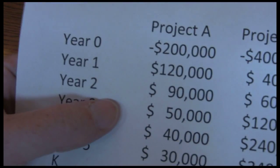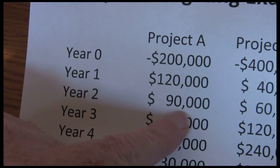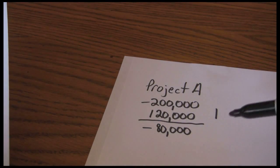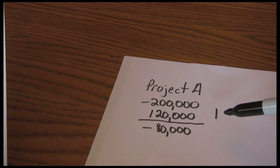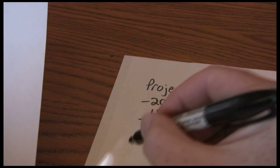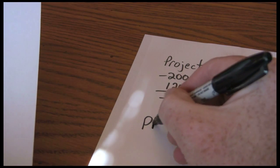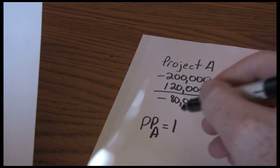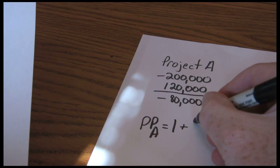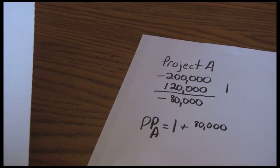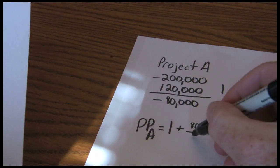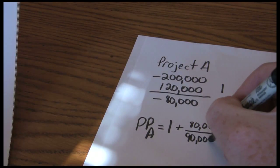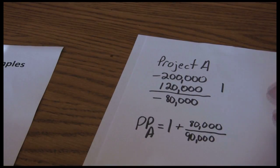Now notice what happens though when we get to year two. In year two, we're supposed to earn $90,000. We only have $80,000 yet to pay back. So we're not going to get our count up to year two before we've paid back that initial investment. So what we want to do is say our payback period for Project A is the one full year that we counted up here, and then the remainder of the cash flows, $80,000 divided by the cash flows we're going to receive in year two, $90,000, which gives us a payback period of 1.89 years.